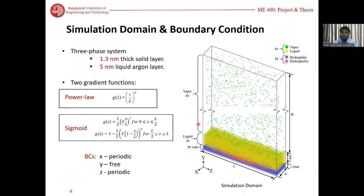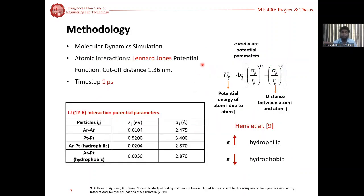We have done molecular dynamic simulation with Lennard-Jones potential function as atomistic interaction function with time step one picosecond. On the right side we can see the potential function. There are two important parameters: epsilon and sigma. Epsilon is called potential well. As we increase the value of epsilon the surface becomes hydrophilic, and as we decrease the value of epsilon the surface becomes hydrophobic.